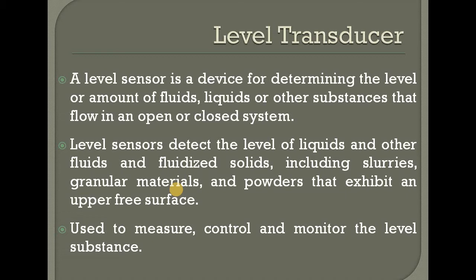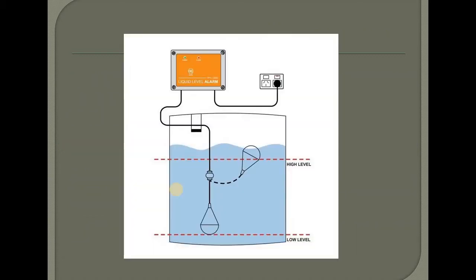To control and measure the level of a substance, let's take an example. We have an automatic motor system. In our office water tank, the motor automatically turns on, the water tank fills, and then automatically shuts off. We have sensors on the water level that connect the device and system to control the motor.